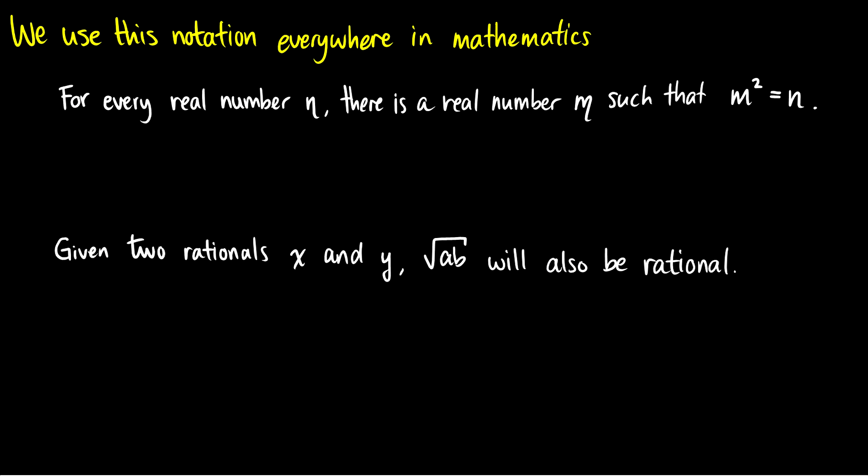So we use this notation everywhere in mathematics. So I'm going to convert some English sentences, well some mathematical statements, into predicate logic. We're going to take it step by step. So the first step, I'll read it out. For every real number n, there is a real number m such that m squared is equal to n. Let's not focus on the proof or whether it's true, let's just translate this into predicate logic.